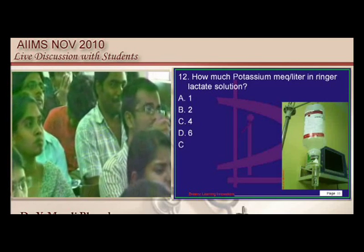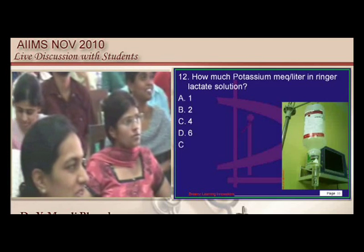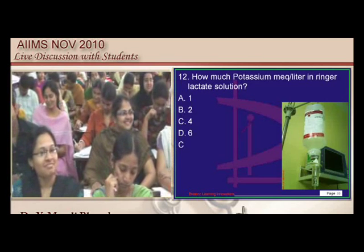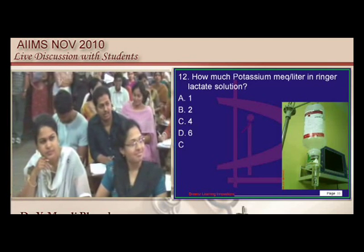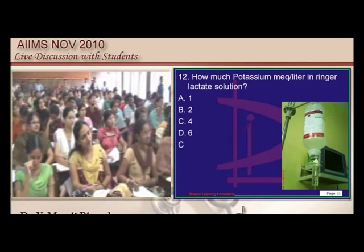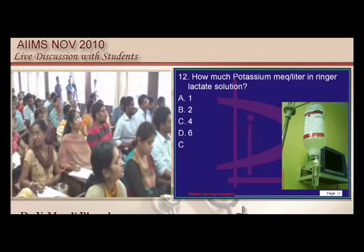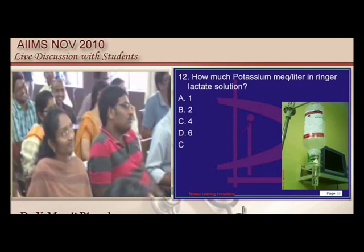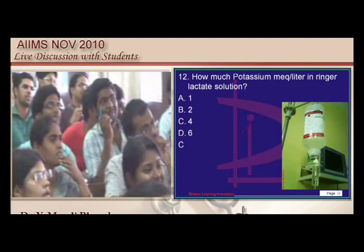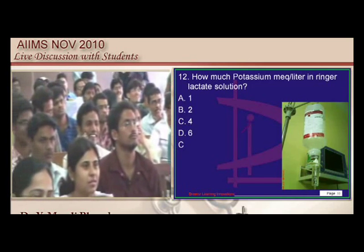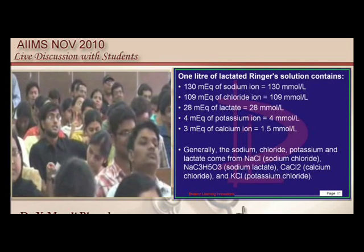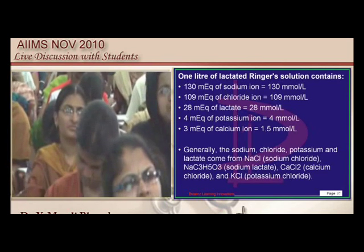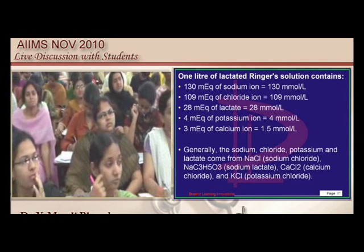This is a tough question. We have all put IV lines during housemanship but never really checked the composition of Ringer's lactate. You need to remember: 4 milliequivalents of potassium, 28 milliequivalents of lactate, 109 milliequivalents of chloride, and 130 milliequivalents of sodium is the composition of Ringer's lactate.